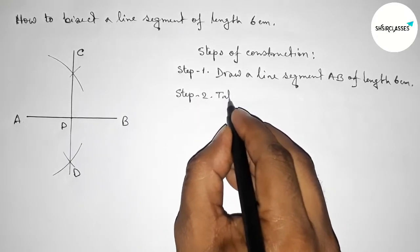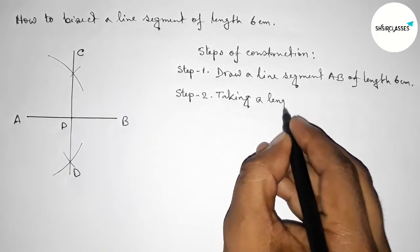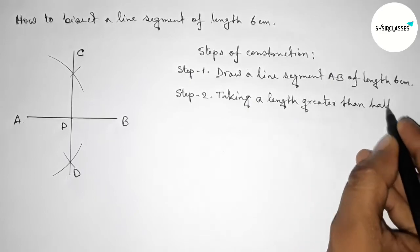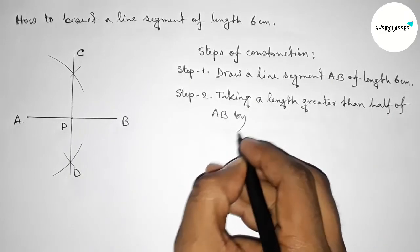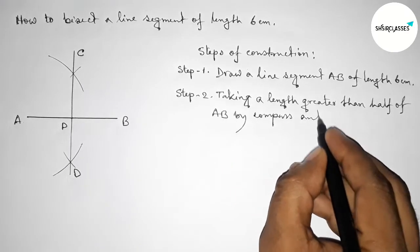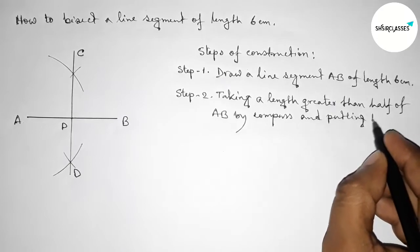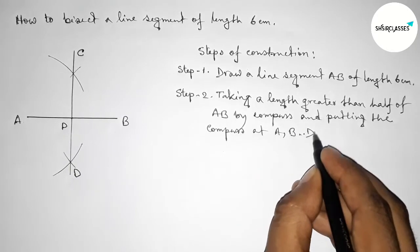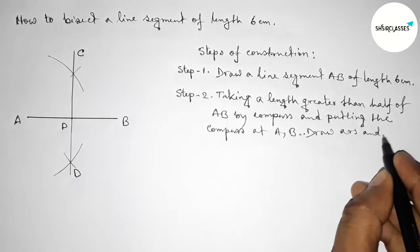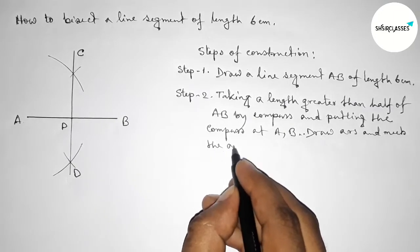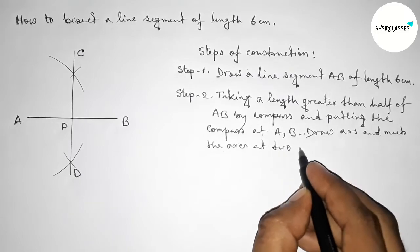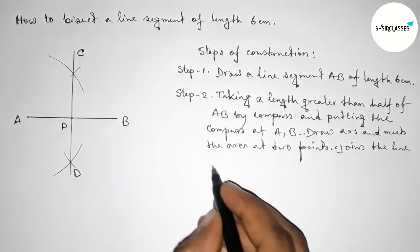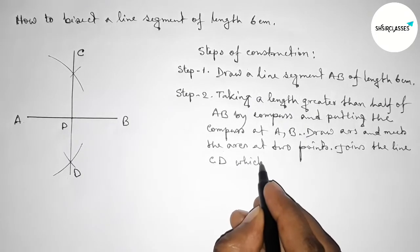Step number two: first take a length greater than half of AB using the compass. Putting the compass at points A and B, draw arcs that meet at points C and D. Join the line CD, which bisects the line AB at point P.